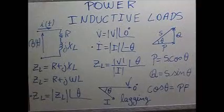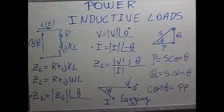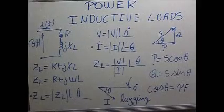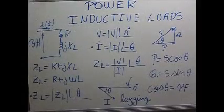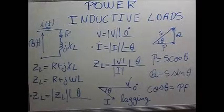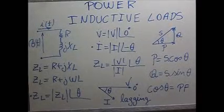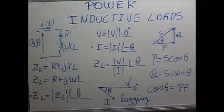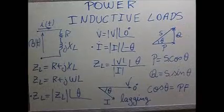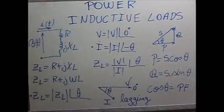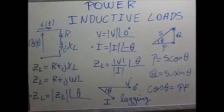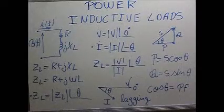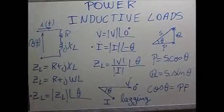The impedance of the load is then R plus jXL. It's a complex number that has a real part and an imaginary part. The real part of this complex number is R, which is the resistance of the wires or a resistor that may be in series with the inductor. And the imaginary part of this number is XL. XL is the inductive reactance.